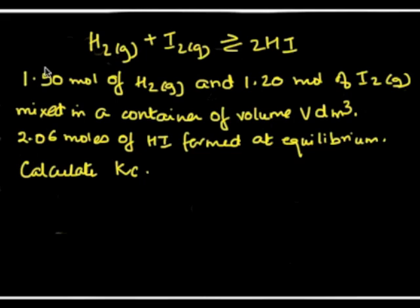Let's look at problem number two. We have 1.5 moles of hydrogen gas and 1.2 moles of iodine mixed together in a container of volume V decimeter cubed. At equilibrium we form 2.06 moles of hydrogen iodide.